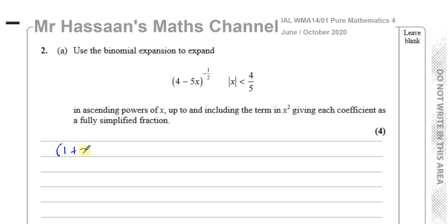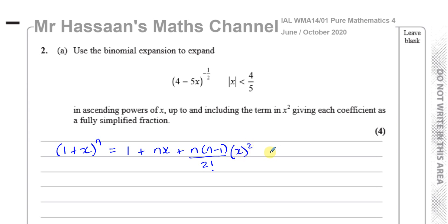The formula states: (1 + x)^n = 1 + nx + [n(n−1)/2!]x² + [n(n−1)(n−2)/3!]x³ + … We only need it up to x², but the pattern continues. The x in the formula stands for whatever term occupies that position in the bracket.